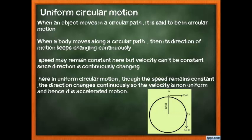Consider a figure where a boy stands at the centre of a circle holding a thread with a stone tied to it, spinning it around. When the stone is at position A moving toward B, suppose it is going east — then at B it moves south, and so on. Direction continuously changes in circular motion. Speed may remain constant, but velocity cannot remain constant because direction changes.